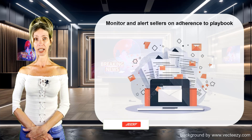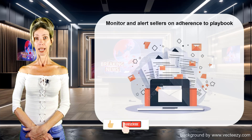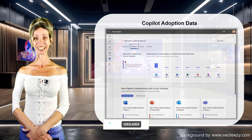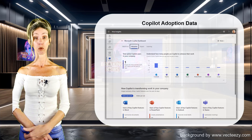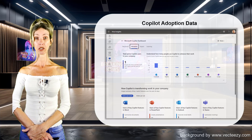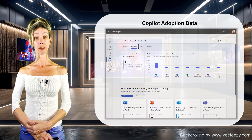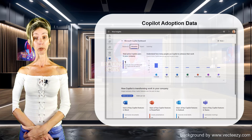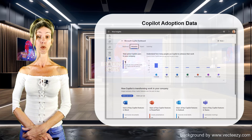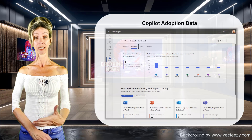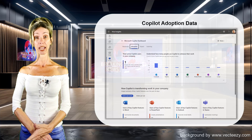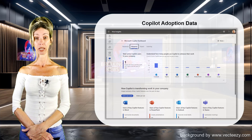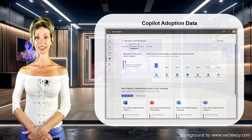To access the Copilot dashboard, admins will need to use Viva Insights because that's actually where the report lives. There's an out-of-the-box Power BI report provided, but if you need to, you can also build your own dashboard. I don't believe there's a Viva Insights license required to access the dashboard — at least today that's not something required, so let's hope it stays that way.